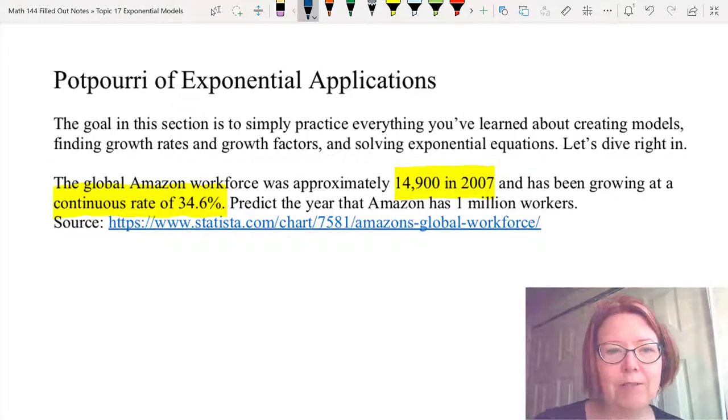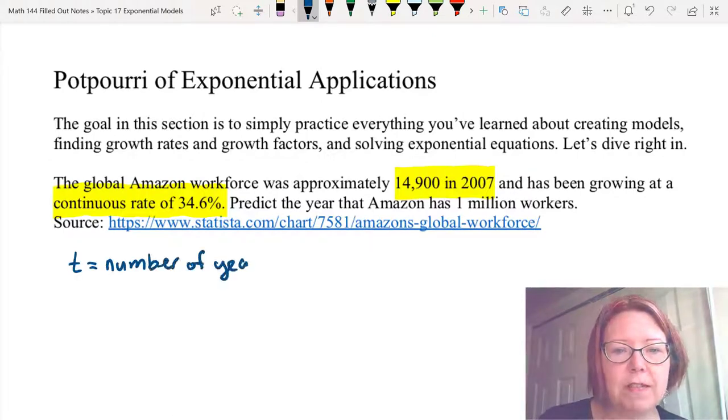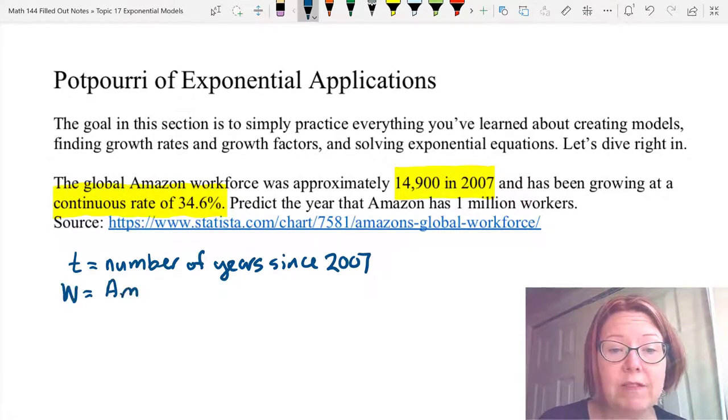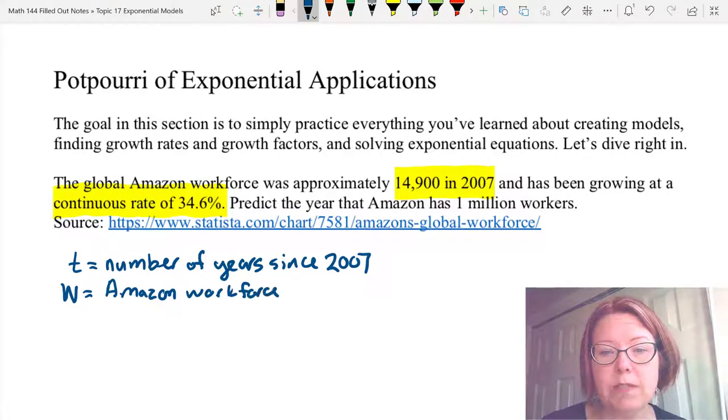Let's start by writing out our variables. I'm going to let T be the number of years since 2007, and I'm going to let W, capital W, be the Amazon workforce.